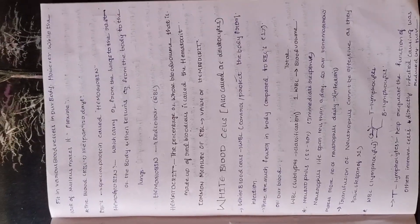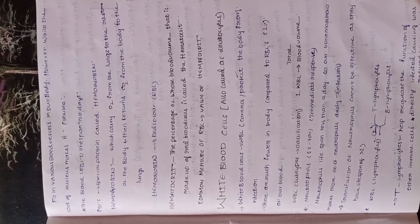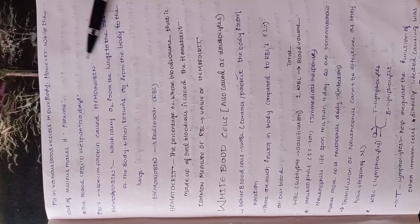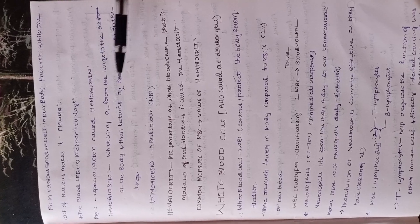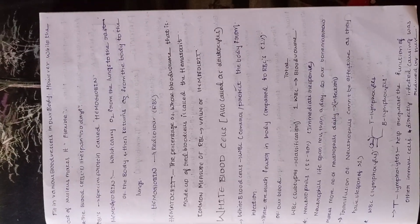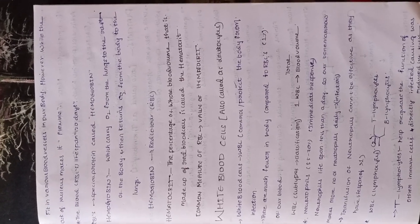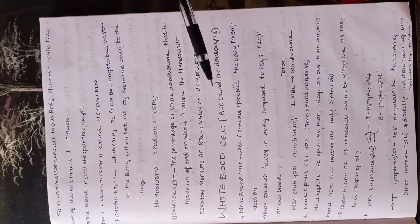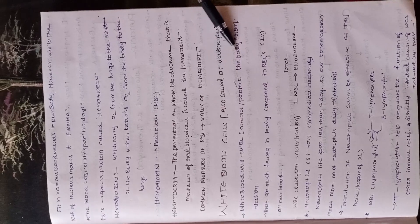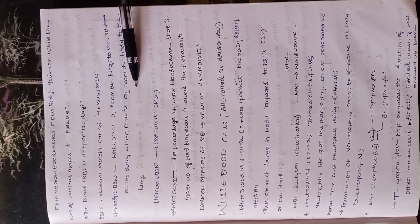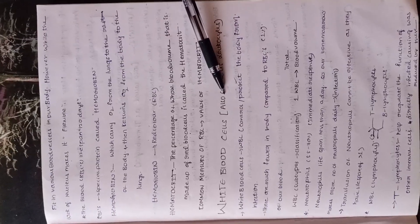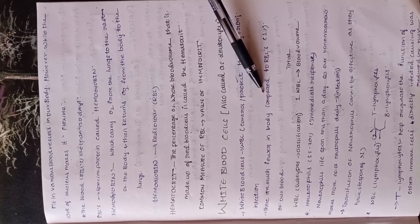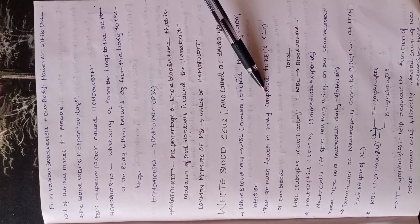White blood cells are very important. WBCs are also called leukocytes. Their main function is to protect the body from infections — unlike RBCs which transport oxygen, WBCs protect against infection. They are much fewer in number and thicker compared to RBCs, which make up 40 to 45% of blood volume.